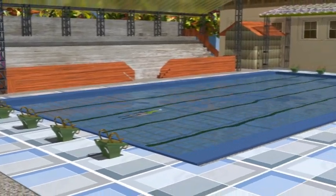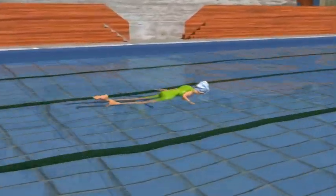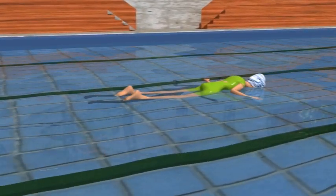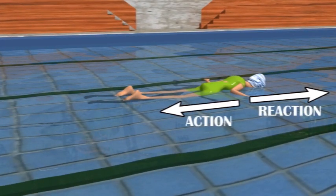Have you ever wondered how are we able to swim in water? During swimming, the swimmer pushes the water backwards with his hands and feet. This helps him to move in the forward direction in water. So it is the equal and opposite reaction of the force which pushes the swimmer forward.